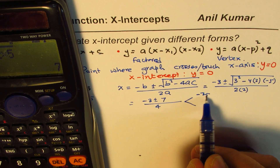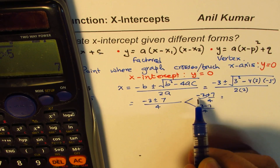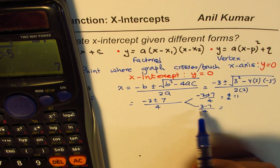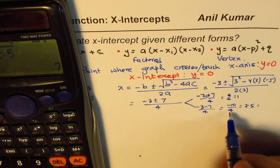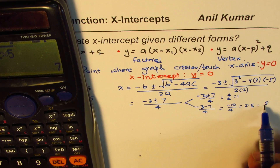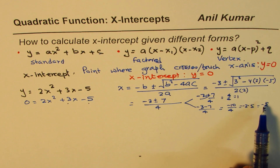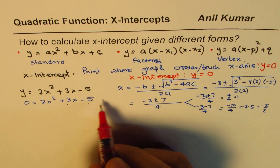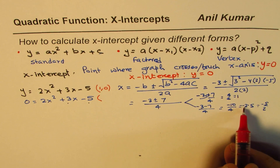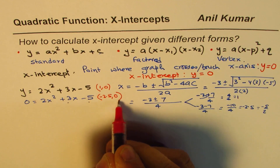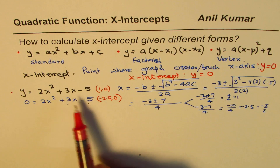This gives two values: one is negative 3 plus 7 over 4, and the other is negative 3 minus 7 over 4. Doing the first gives 4 over 4, which is 1. Doing the second gives negative 10 over 4, which is negative 2.5 or negative 5/2. So the two x-intercepts are at (1, 0) and (−2.5, 0). If given in standard form, use the quadratic formula — you can also factor as we could have done in this case.